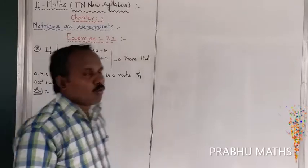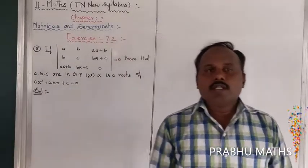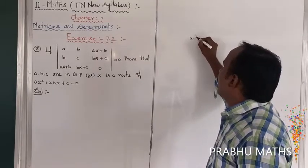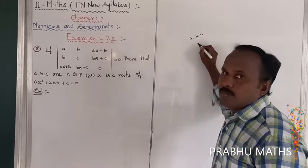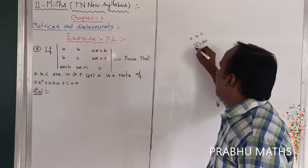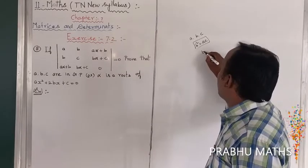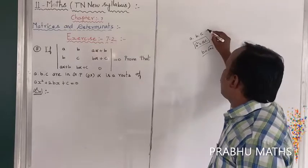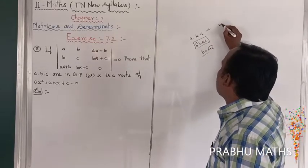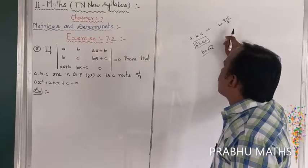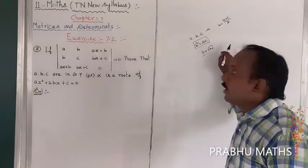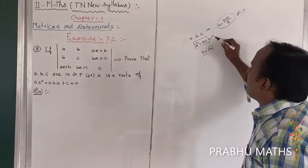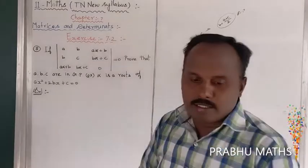First of all, to prove GP — what is GP? In the GP series A, B, C, the GP condition is B squared, that is equal to AC. So B squared is equal to AC, or B is equal to root of AC. The condition B equals A plus C divided by 2 is for AP, not GP. So for GP, B squared minus AC equals 0.